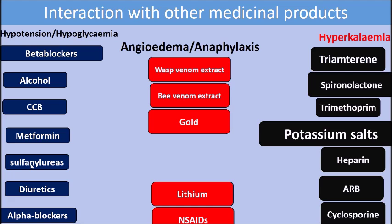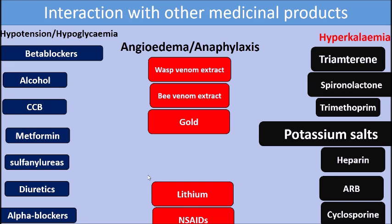The fourth interaction group involves drugs that cause renal disease — particularly lithium and NSAIDs. ACE inhibitors can block the excretion of lithium, increasing lithium concentration, which is very toxic. NSAIDs antagonize the hypotensive effect of ACE inhibitors and also cause renal disease, so they are better avoided. By remembering these four categories — hyperkalemia, angioedema/anaphylaxis, hypotension/hypoglycemia, and renal/nephropathy drugs — you can recall all key ACE inhibitor interactions.